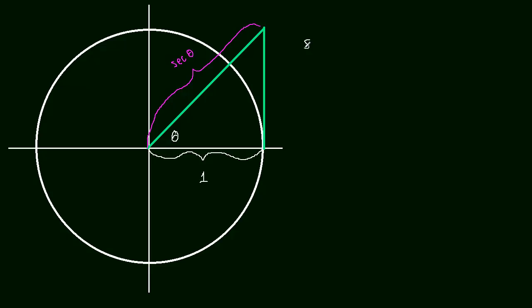So we have the sine of theta equals the opposite side over the hypotenuse. And the hypotenuse, we know, is secant of theta. So what we can do is we can multiply both sides by secant, and we'll have something that is equal to the opposite side. So let's do that.